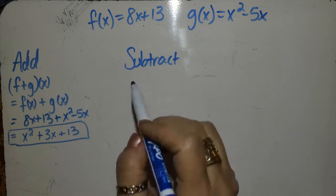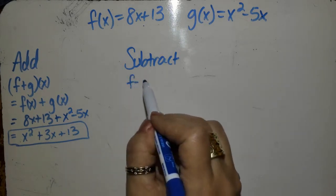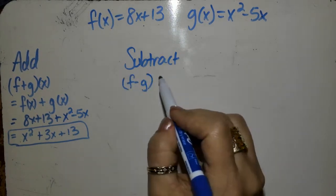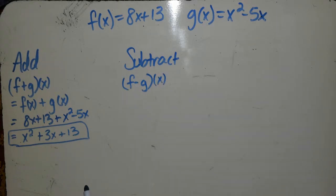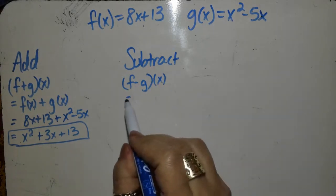Now, for subtraction, you have to be careful on which one is coming first. So you may see f minus g times x, which also means